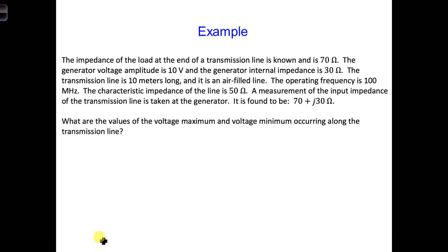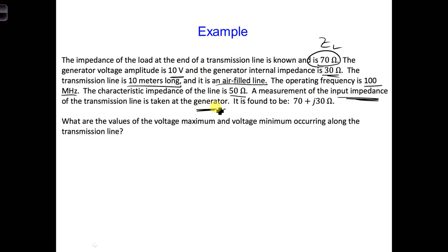Let's go over an example that puts together many different things we've been learning about in this section of the course. The impedance of the load at the end of the transmission line is 70 ohms — that's Z_L. The generator voltage and generator internal impedance are given. The transmission line is 10 meters long and is air-filled. The operating frequency is 100 megahertz. The characteristic impedance is 50 ohms. When taking a measurement of the input impedance of the transmission line at the generator, it is found to be 70 plus j30 ohms. What are the values of V_max and V_min occurring along this transmission line? This is kind of a tough question, but let's see how far you can get.